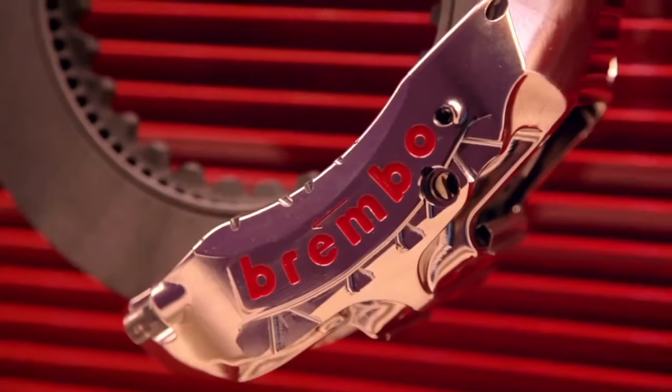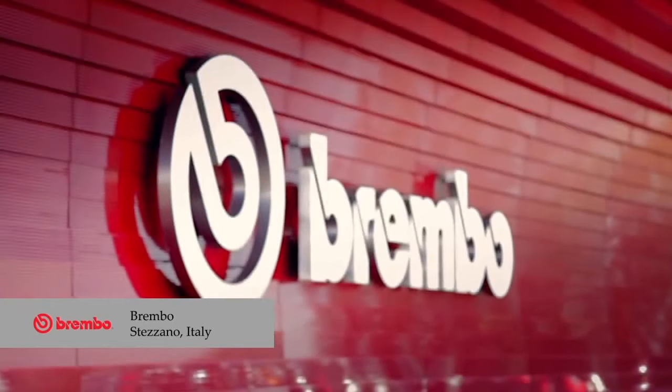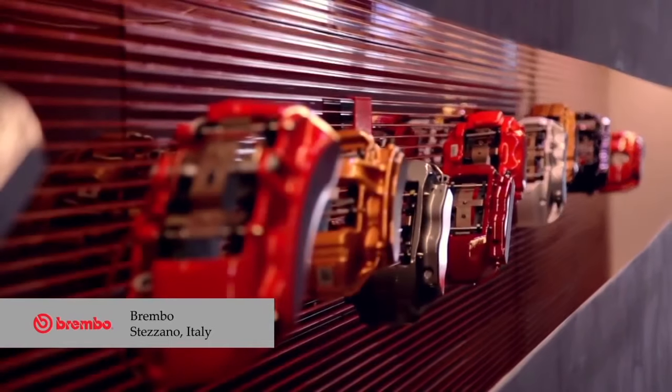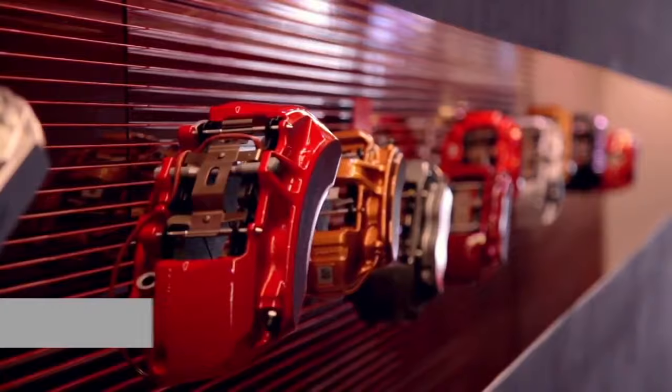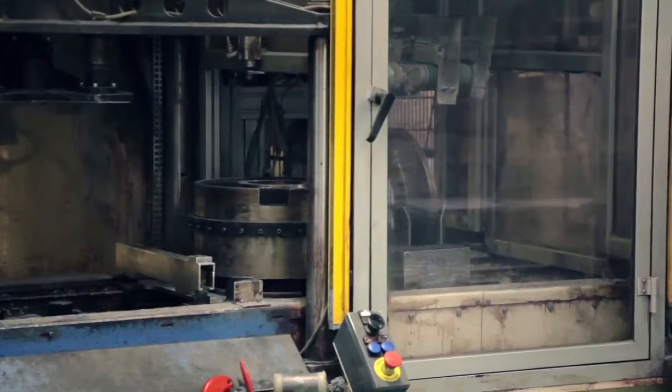The 380 mm diameter CCM brake discs for the Pagani Huayra are manufactured exclusively at the Brembo plant in Stezzano. In this high-tech environment, the world's most innovative braking solutions are developed.